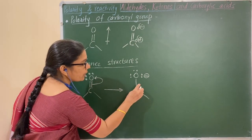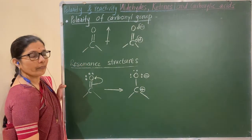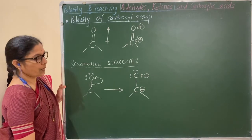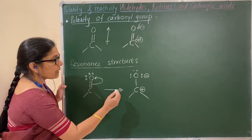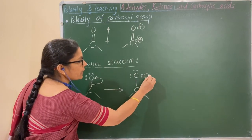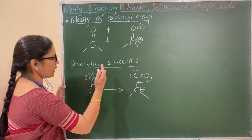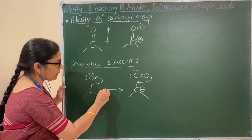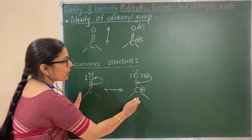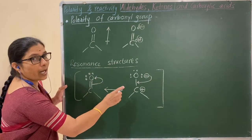Now, here there is no bond remaining. Therefore it results in a positive charge on the carbon and a negative charge on the oxygen. That is, the original structure is converted into this resonance form. These are the two resonance structures of the carbonyl group.